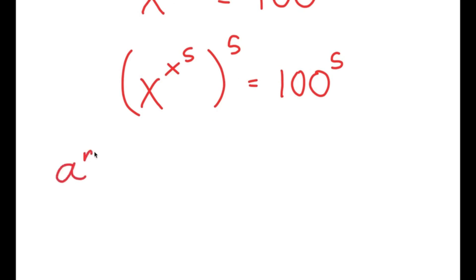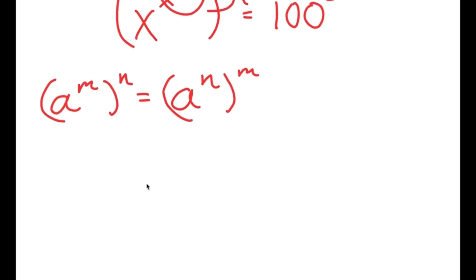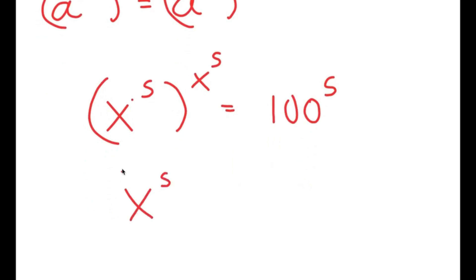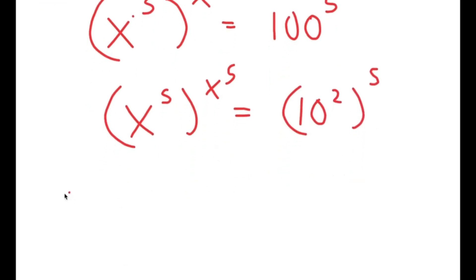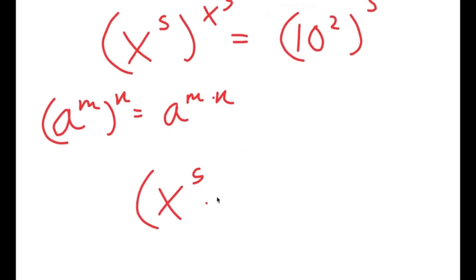I can use the property a to the power of m to the power of n equals a to the power of n to the power of m on x to the power of x to the power of 5, all to the power of 5. We can think of x to the power of 5 as m and 5 as n, so I can switch the places of these two. So now I get x to the power of 5 to the power of x to the power of 5, equals 100 to the power of 5. Now, I'm going to rewrite 100 as 10 squared, so I have 10 squared to the power of 5. Using the property a to the power of m to the power of n equals a to the power of m times n, I get 10 to the power of 10.